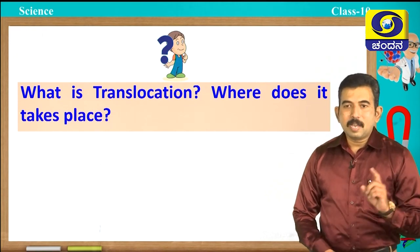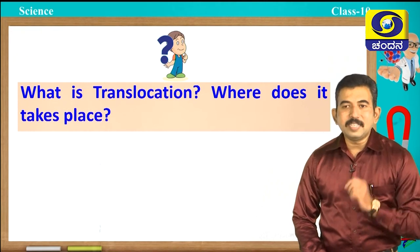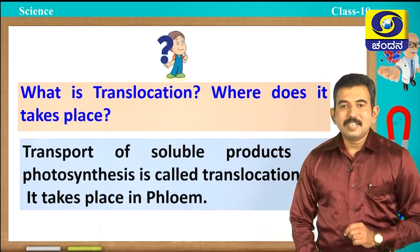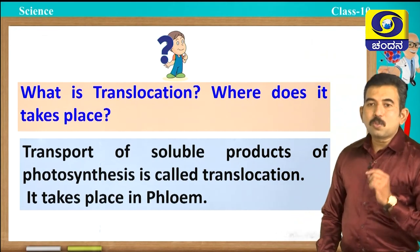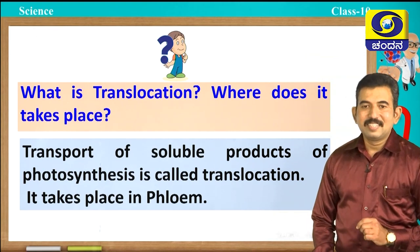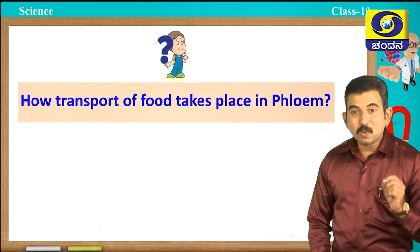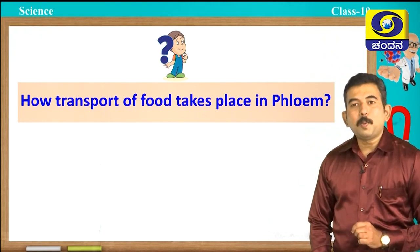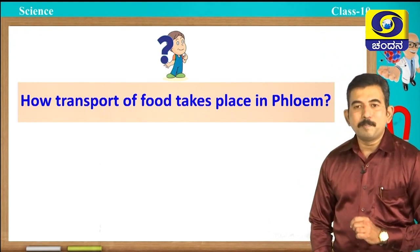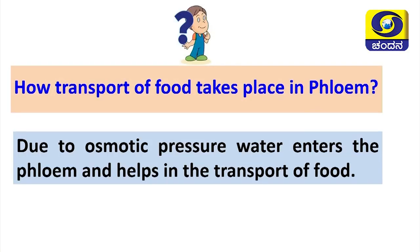What is translocation and where does it take place? Transport of soluble products of photosynthesis is called translocation, and it takes place in phloem. How does transport of food take place in phloem? In phloem, due to osmotic pressure, water enters the phloem and helps in the transport of food.